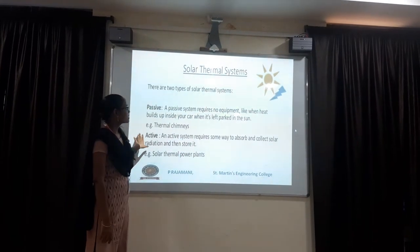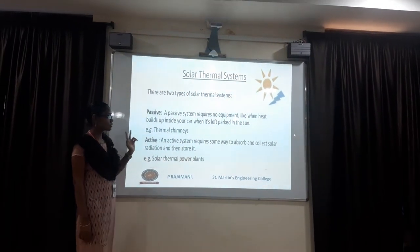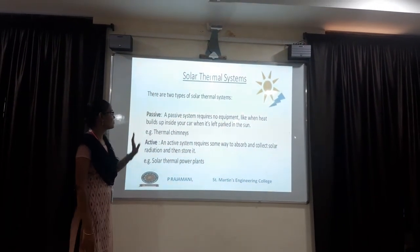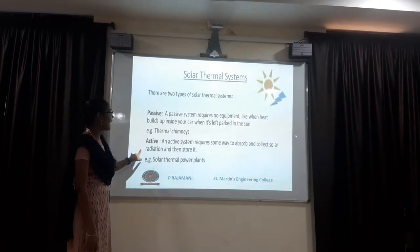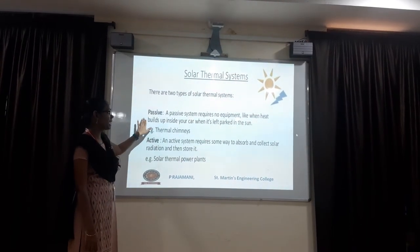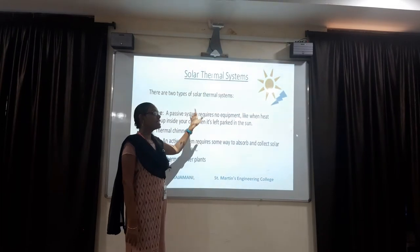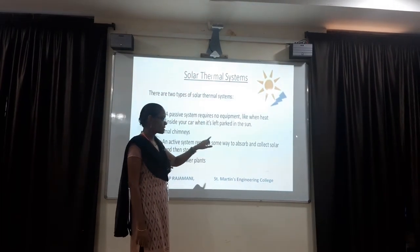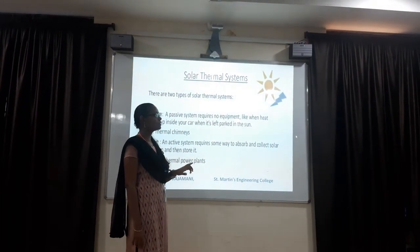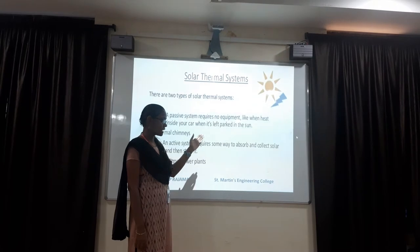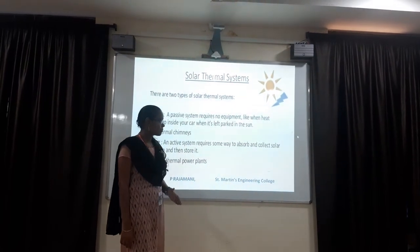Solar thermal systems - we have two types. First one is passive, and the second one is active. In the passive system, there is no equipment between the sun and the absorber body. The sun is directly connected to the absorber body. For example, we use thermal chimneys.